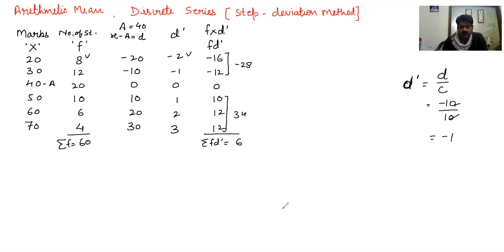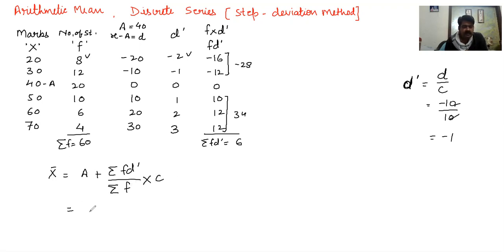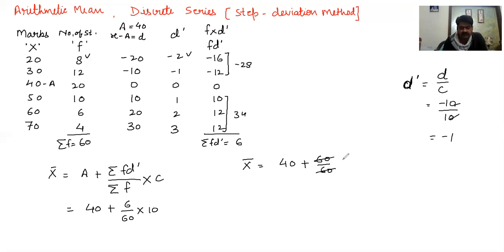Now we apply the formula: Mean equals A plus (sigma fd dash divided by sigma f) multiplied by c. The assumed mean is 40, sigma fd dash is 6, sigma f is 60, and c is 10. So mean equals 40 plus (6 divided by 60) multiplied by 10, which is 40 plus 60 divided by 60, giving 40 plus 1 equals 41. This is our answer — this is how we calculate using the step deviation method.